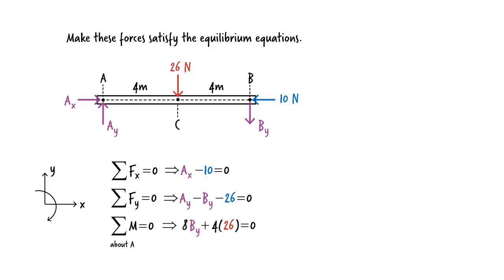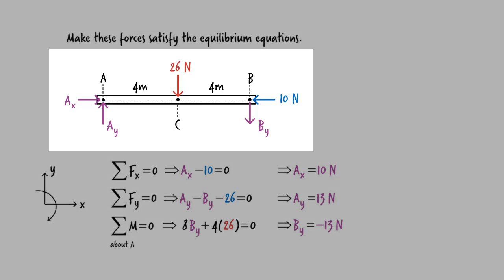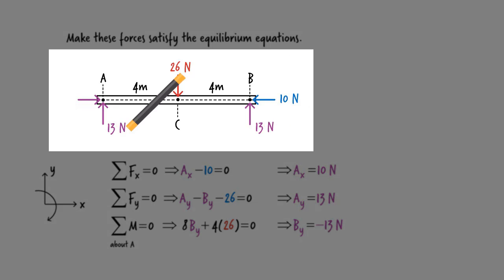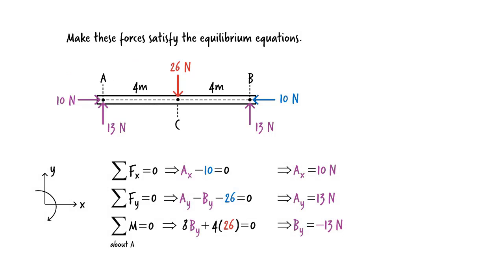Solving these equations for the unknowns, we get the values for A-x, A-y, and B-y. Here, the negative magnitude for B-Y tells us that static equilibrium can be maintained only if the force is acting in the opposite direction. Therefore, we can show the forces that ensure the static equilibrium of the rigid body this way.